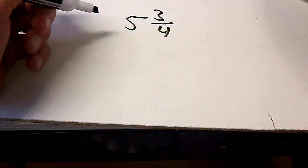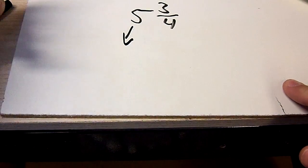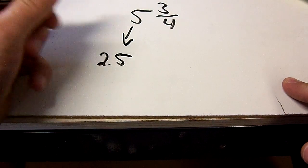So this is how I do it. What you're going to do is you're going to take the five. Half of five is going to be what? Two and a half.